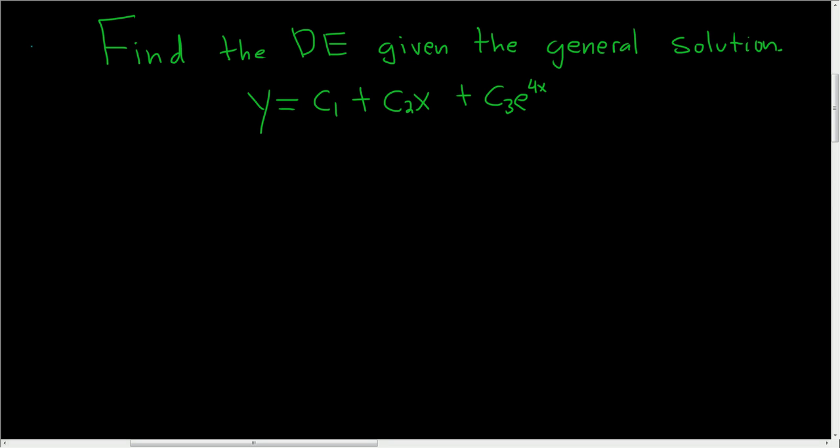Find the differential equation given the general solution. So in this case, we want to think of this as e to the 0x, and then here we want to have also an e to the 0x.